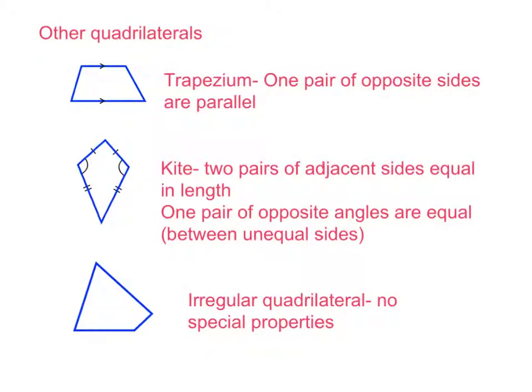Besides parallelograms, there are a few other quadrilaterals — three different ones, and they're a little bit different. We've got the trapezium, which is our top example here. It has one pair of opposite sides that are parallel. We can tell this because of a little arrow symbol — a new annotation — meaning they're parallel. These little arrows pointing in one direction means that both of these opposite sides are running in the same direction, so they're parallel. That's a trapezium — it has four sides, and one pair of opposite sides are parallel.